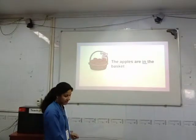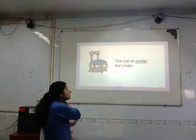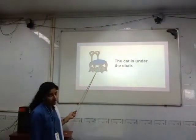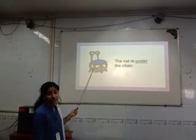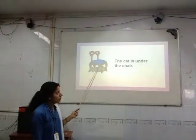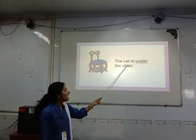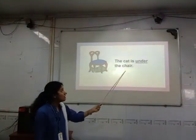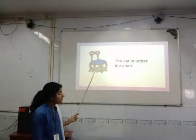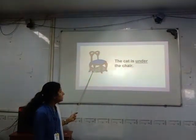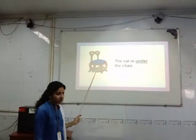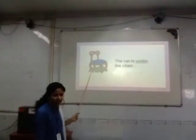Now see the next example. What have you seen in this picture? The cat is here. And where is she? Where is the cat? The cat is under the chair. Read this sentence: The cat is under the chair. So the word 'under' shows us exactly the position of the cat.